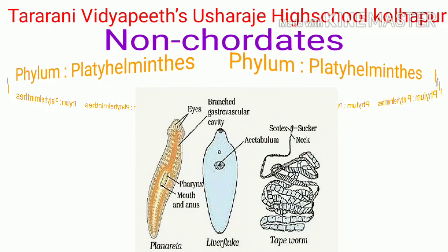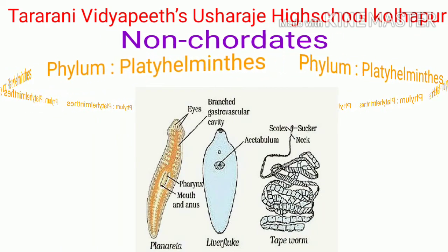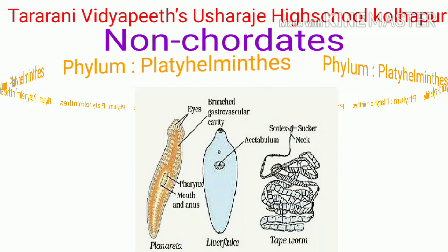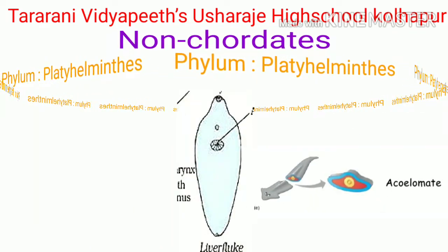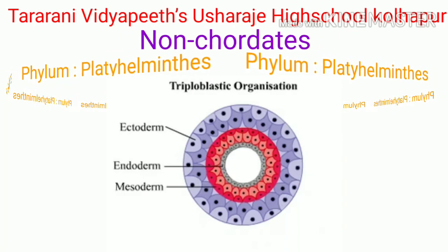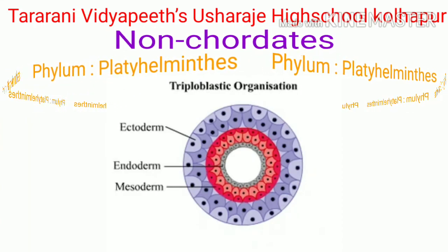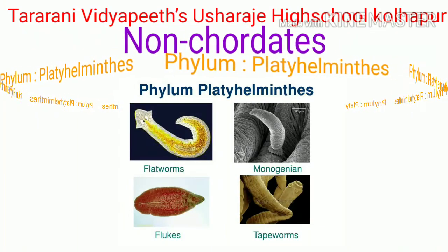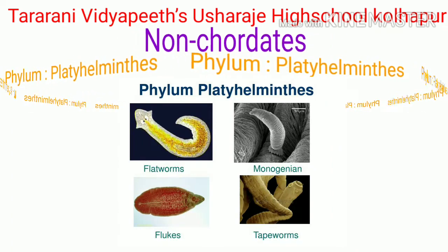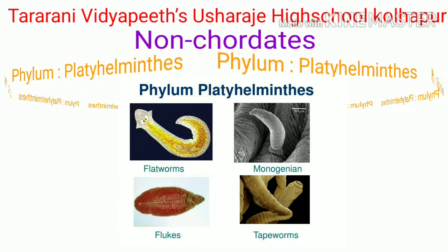Phylum Platyhelminthes: the body of these animals is slender and flat like a leaf or strip, hence they are called flatworms. Most are endoparasites; few are free-living and aquatic. The body is acoelomate and bilaterally symmetrical. These are triploblastic — their body is made up of three germ layers: endoderm, ectoderm, and mesoderm. These animals are hermaphrodites, meaning male and female reproductive systems are present in the same animal body.